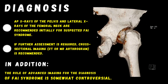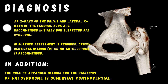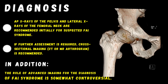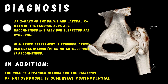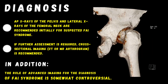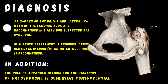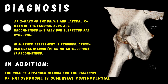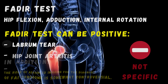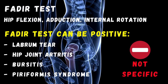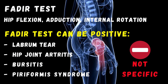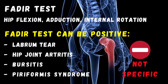Regarding diagnosis of FAI, AP x-rays of the pelvis and lateral x-ray of the femoral neck are recommended initially for suspected FAI syndrome. In addition, if further assessment is required, cross-sectional imaging — CT scan or MRI arthrogram — is recommended. For physical examination of FAI, various pain provocation hip impingement tests are used clinically.